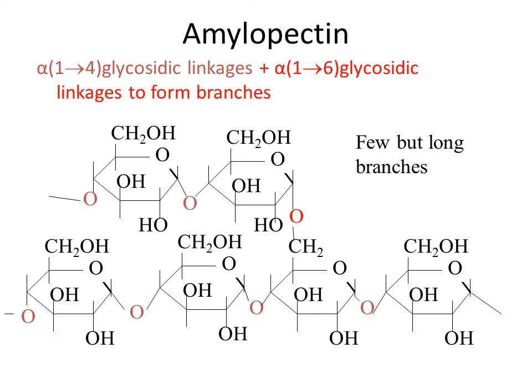With amylopectin, you also have alpha glucose and all of the 1,4 linkages have the oxygen down, but there are branches formed on the six carbon — the hydroxyl group on the methyl group sticking up on the alpha ring. A branch forms off there, and within that branch you have alpha 1,4 linkages. It is just attached to the glucose in the main chain by the number six carbon.